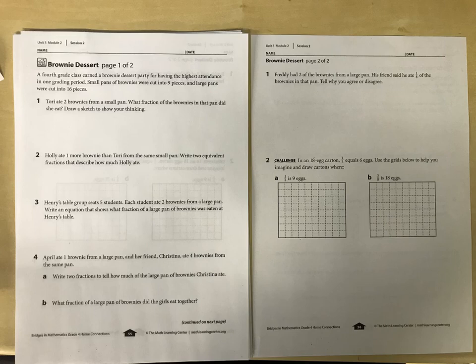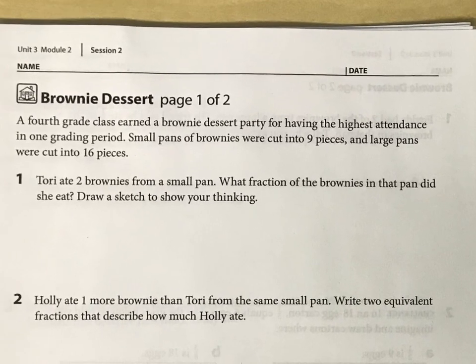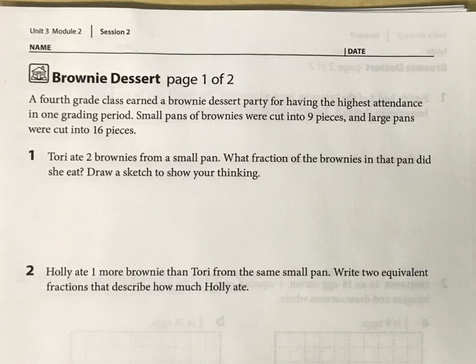All right, so we're looking at brownies now to help us with fractions. We'll see this fourth grade class is having a brownie dessert party, and there were small pans of brownies and also large pans of brownies. The small pans were nine pieces and the large pans were 16 pieces.